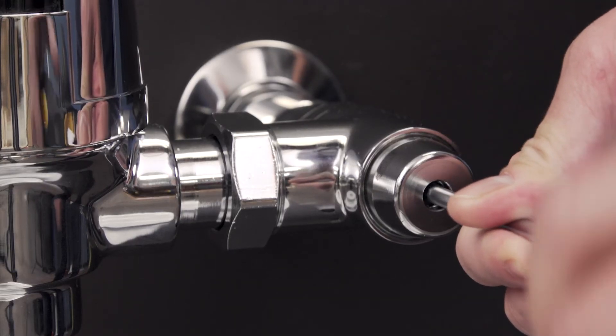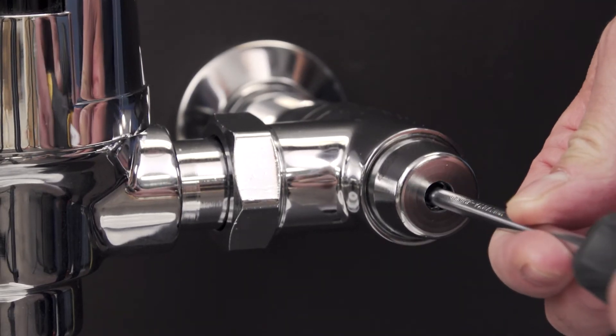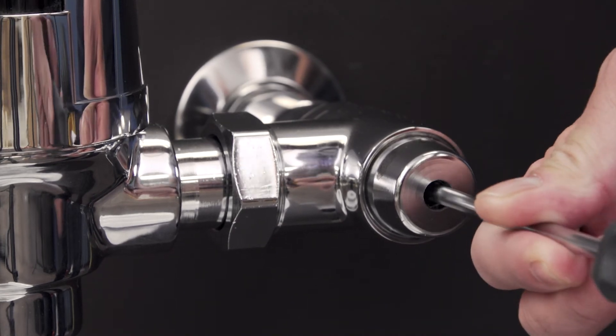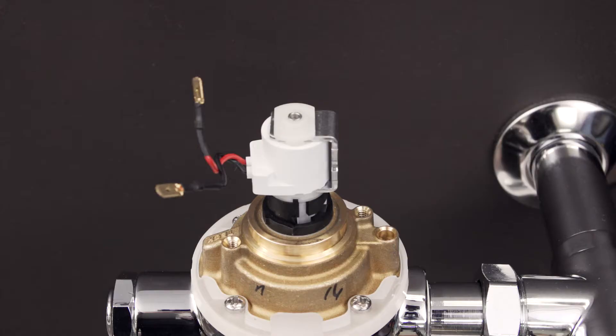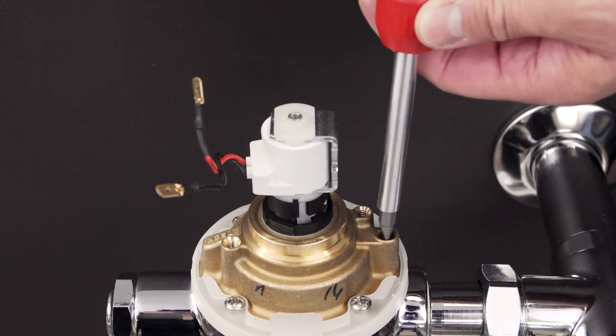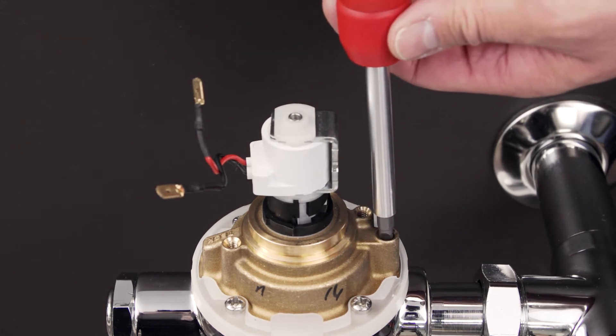If there's an excessive amount of water coming out during each flush, then first check the inlet stop. Close the inlet stop valve all the way, then open it one complete turn. Check the position of the regulating screw and make sure that there are no obstructions.